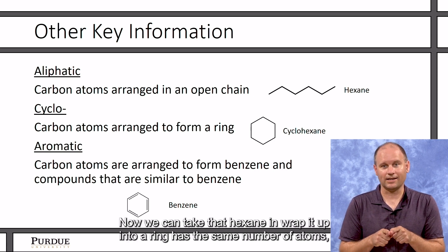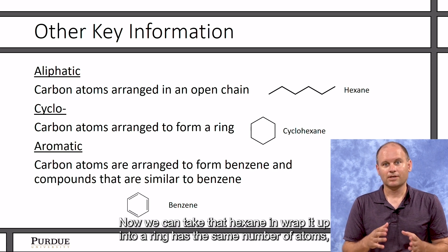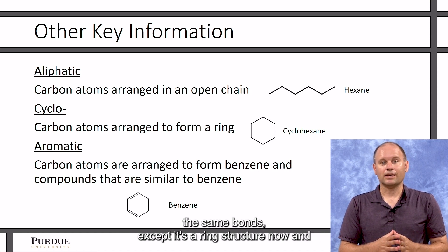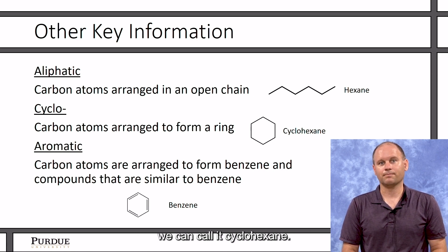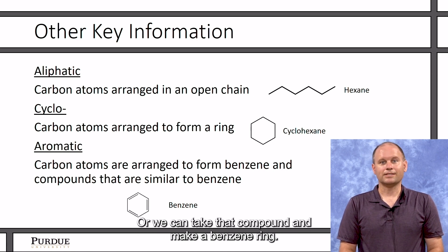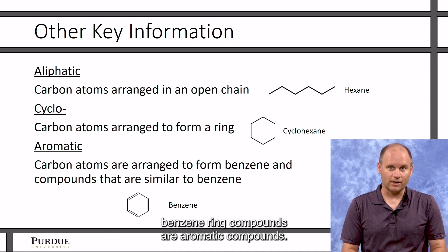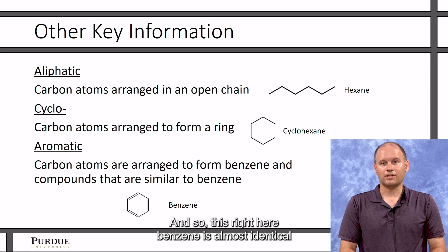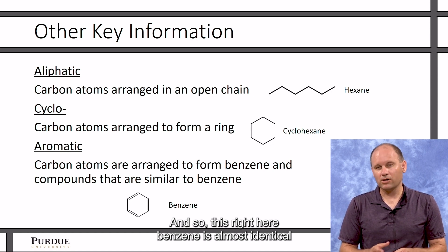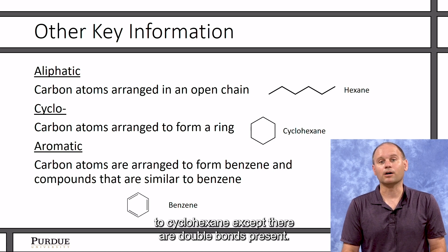Now we can take that hexane and wrap it up into a ring. It has the same number of atoms, the same bonds, except it's a ring structure now, and we can call it cyclohexane. Or we can take that compound and make a benzene ring. And compounds that are based on benzene or benzene ring compounds are aromatic compounds. And so this right here, benzene, is almost identical to cyclohexane, except there are double bonds present.